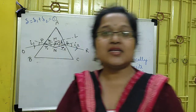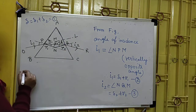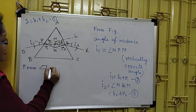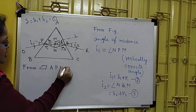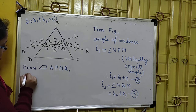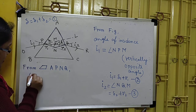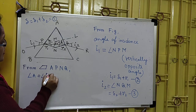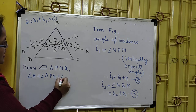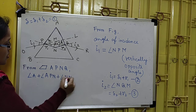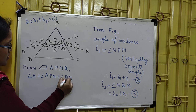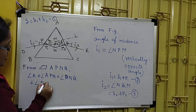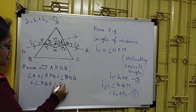The sum of all angles of a quadrilateral is equal to 360 degrees. So from quadrilateral APNQ, the sum of all angles means angle A plus angle APN plus angle PNQ plus angle NQA is equal to 360 degrees.